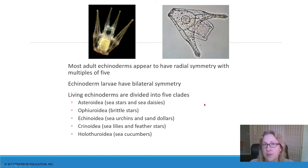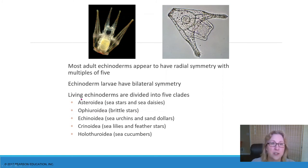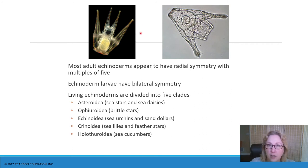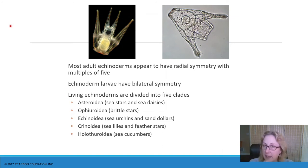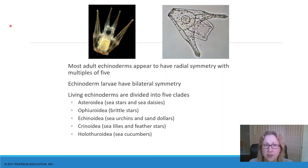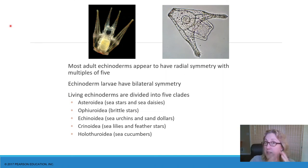Even though most echinoderms look like they have radial symmetry as adults, they're actually not radially symmetric — they are bilaterally symmetric, and we can see that most clearly in their embryonic stages. This swimming larval stage of an echinoderm is clearly bilaterally symmetric — you can draw a line down the middle and it's two mirror images. They change to their five-way symmetry during development. In fact, the adult with five-part symmetry develops inside the larva and kind of grows out of one side of the larva. It's very unusual.